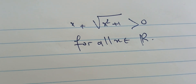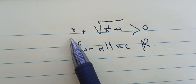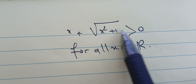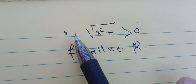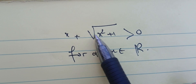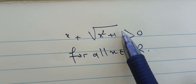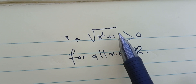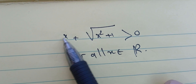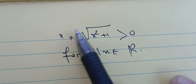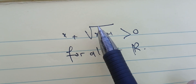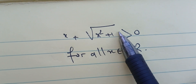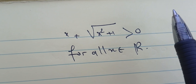First, note that if we treat x plus the square root of x squared plus one as a function, we see that the domain is ℝ, because x squared plus one is always bigger than zero, so we don't have a problem defining the square root. This is defined for all the reals, so we have a sum of two functions both defined on ℝ. The aim is to prove that this quantity x plus the square root of x squared plus one is strictly bigger than zero.